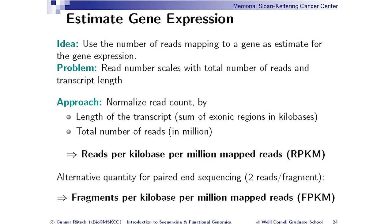Gene expression — you've probably received big matrices with gene expression values before. The idea is simple: use the number of reads mapping to a gene as an estimate for gene expression. If you align 100 million reads and for one gene you have 1,000 reads, that's 1,000 out of 100 million. Obviously the number of reads scales with how many reads you sequence, and it also scales with the length of the gene.